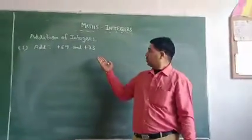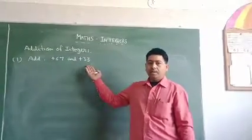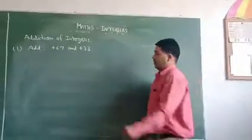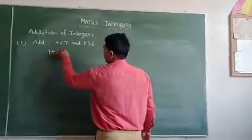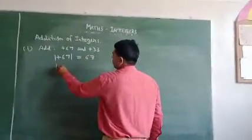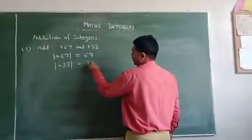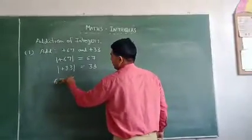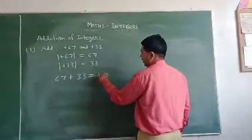If we add two like integers, they are both like because both have positive integers. We add their absolute values and prefix the same sign. The absolute value of 67 is 67 and the absolute value of 33 is also 33. Now we add: 67 plus 33, we get 100.